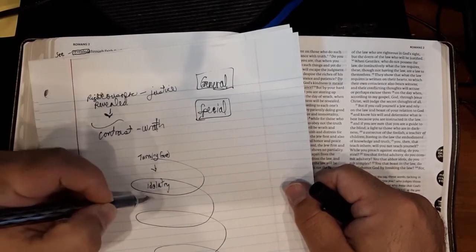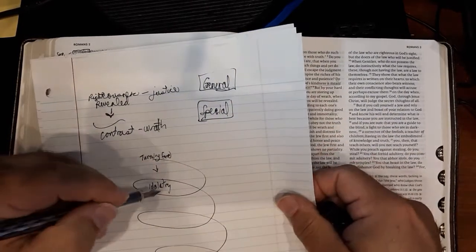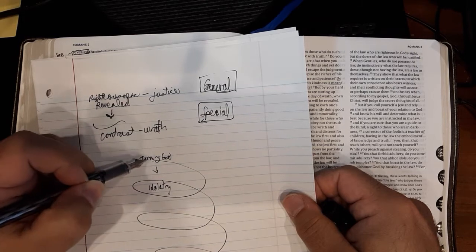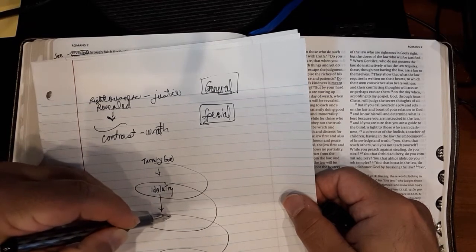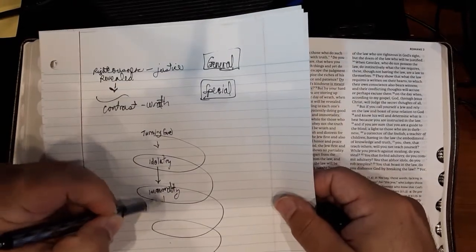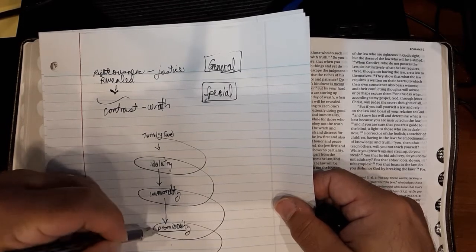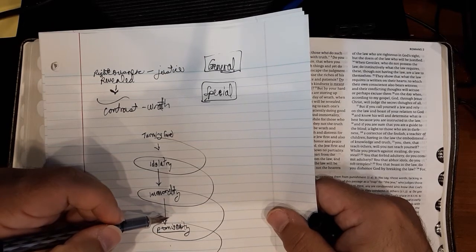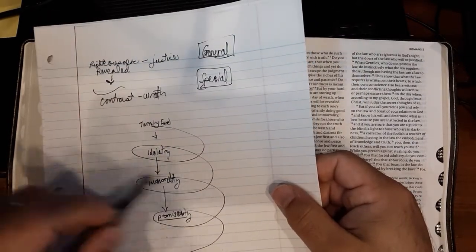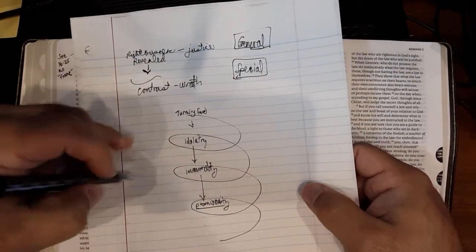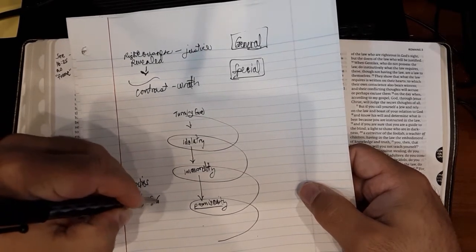In the ancient world, or in Paul's time, if you read the writings, for instance, that Paul would have been reading, not only the Hebrew Bible, but other writings like the Wisdom of Solomon, there was a very fast degradation from turning away from God to idolatry and worshiping yourself as God or others to immorality. And then what happens in the economy in the ancient world is that immorality leads very quickly to promiscuity, which is the most heinous external demonstration of sin in one's life.